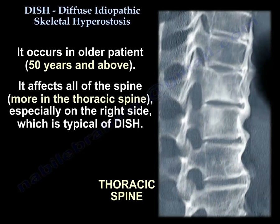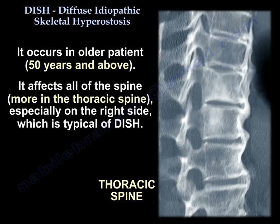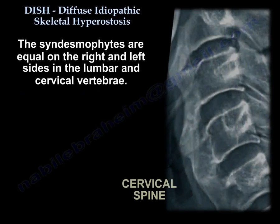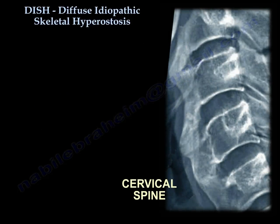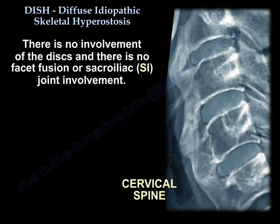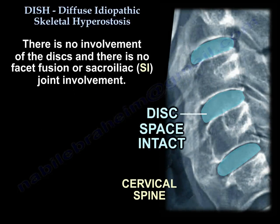It occurs in older patients, 50 years and above. It affects all of the spine but more in the thoracic spine, especially on the right side — that is typical of DISH. The syndesmophytes are equal on the right and left side in the lumbar and cervical vertebrae. There is no involvement of the discs and no facet fusion or sacroiliac joint involvement.